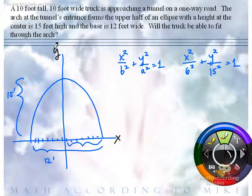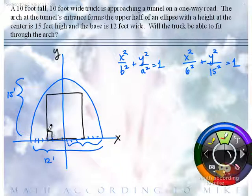It's a one-way road, so it would make sense for the truck to go down the center of it. So here's a possible drawing. We have this square truck — I'm assuming the wheels are underneath, so we don't have to worry about that part. But if it's 10 feet wide, how far is it from the center of the road?